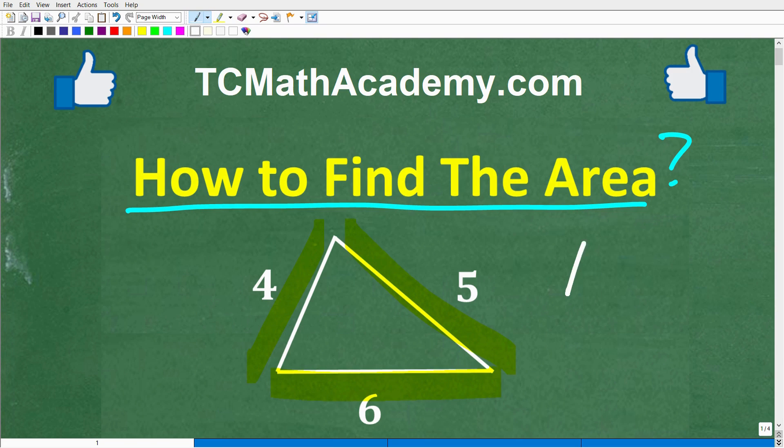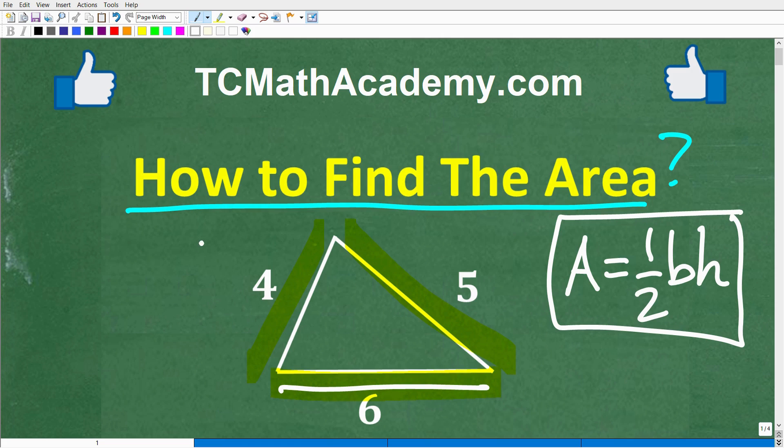And if you know the formula for the area of a triangle, area is equal to one half base times height. So that's pretty straightforward. Unfortunately, we have the base, but we don't have the height of the triangle. We don't have this part right here. So what can we do?